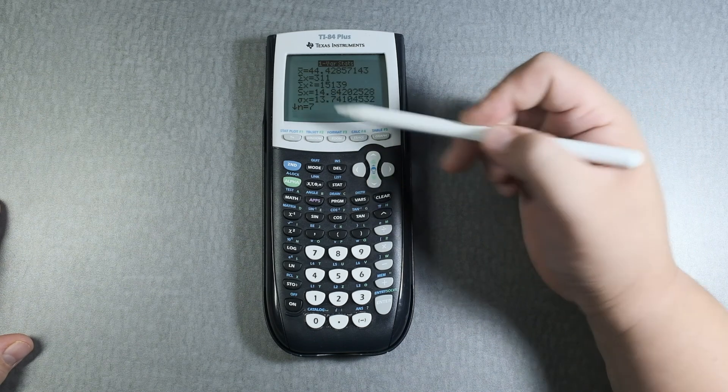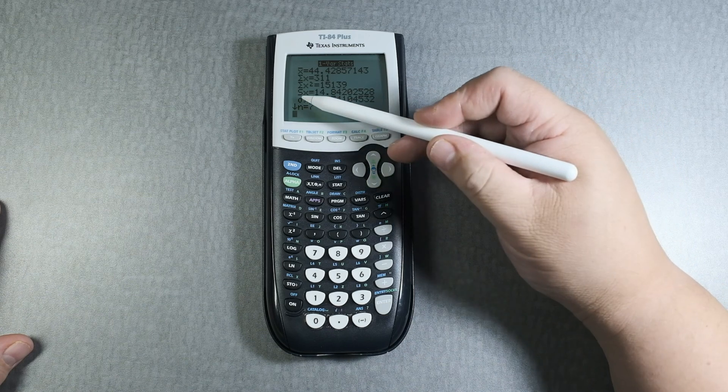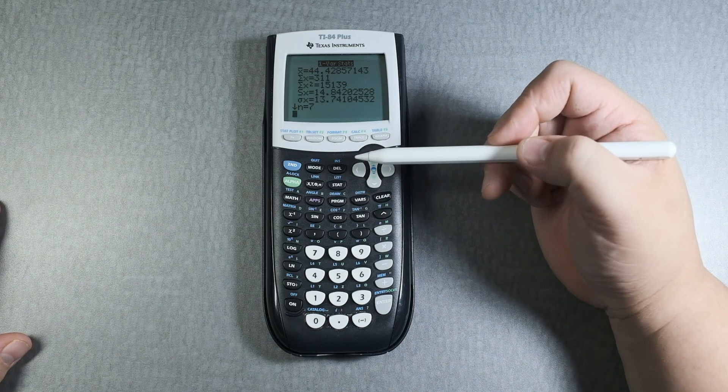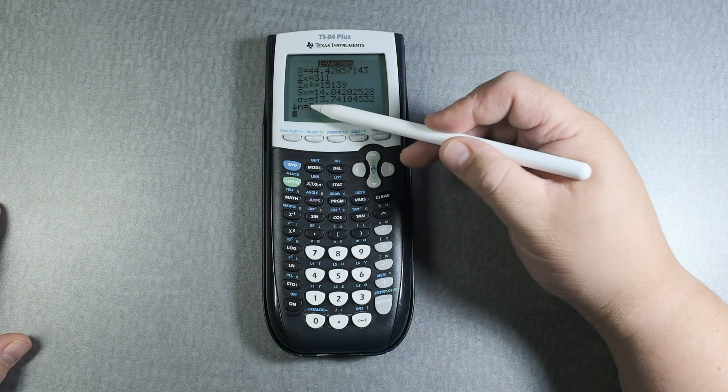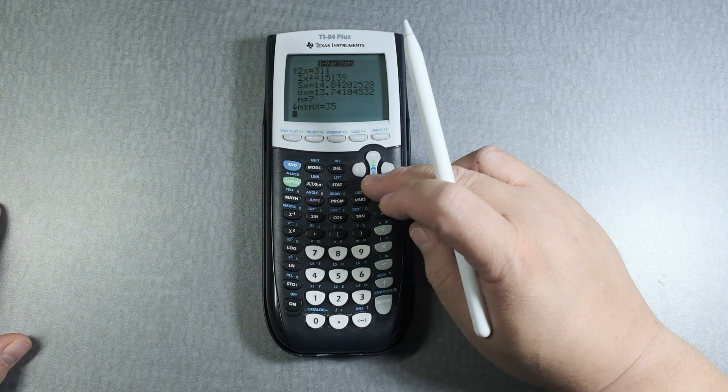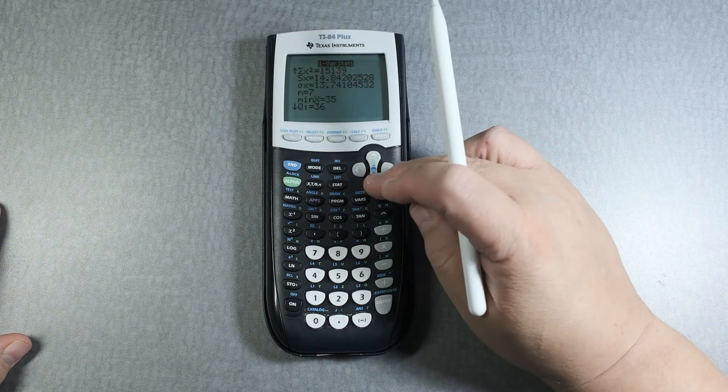It gives you sx, which is the standard deviation. It gives you sigma x, which is the population standard deviation. Then it gives you how many values of x you have, in this case, seven.